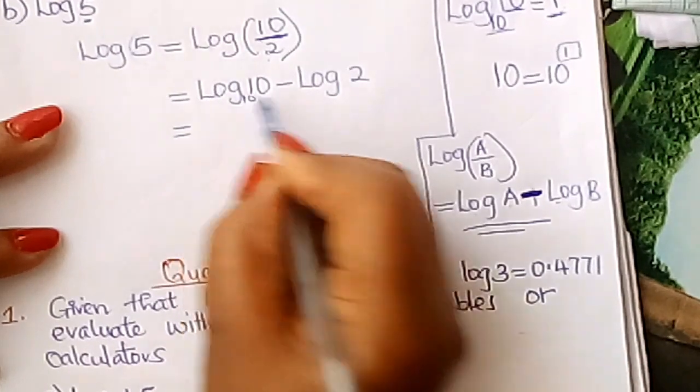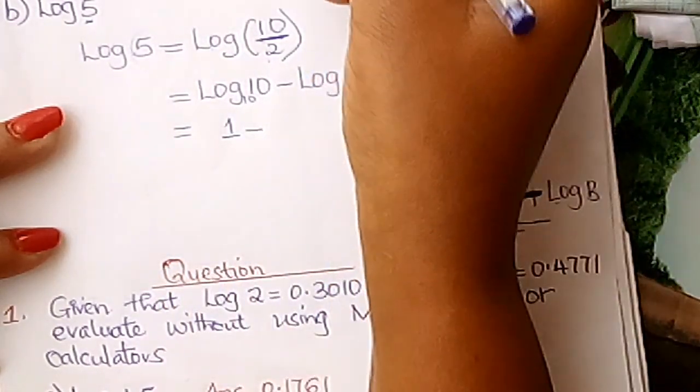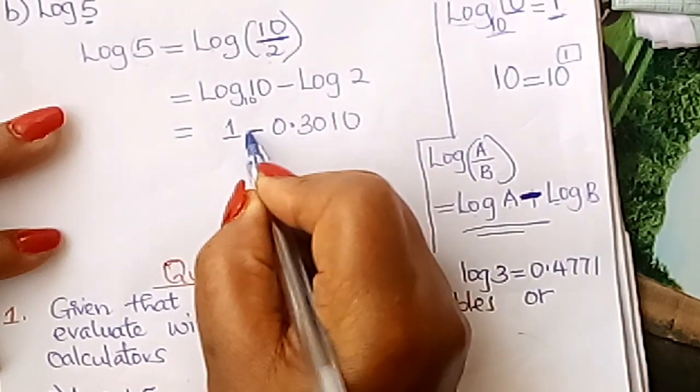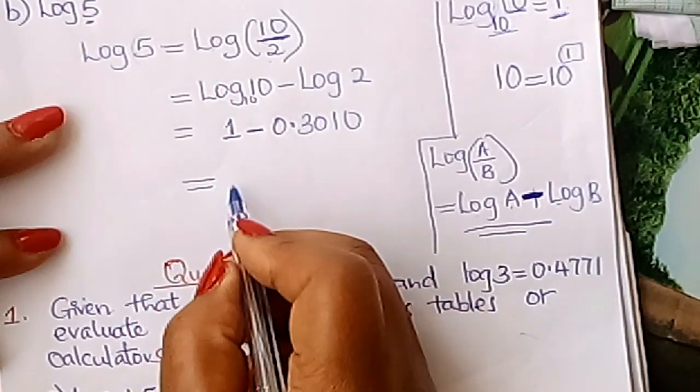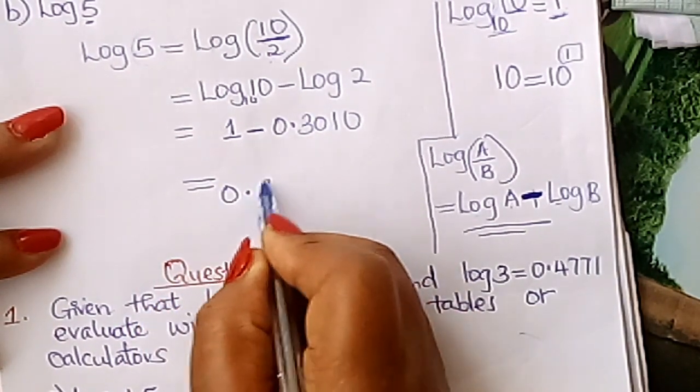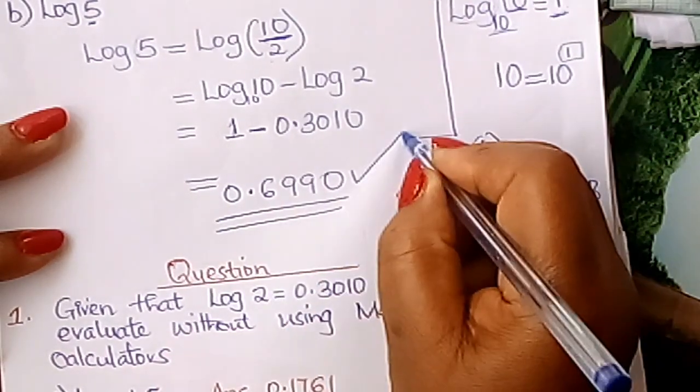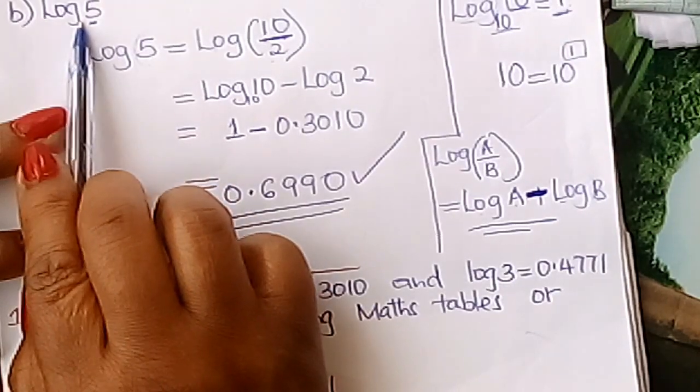Log 10 to base 10 learner, we have said it is 1 minus our log 2, which is up here, which is that. 1 minus that gives you what learner. You subtract, you get 0.6990. And that is your answer of log 5 to base 10 learner.